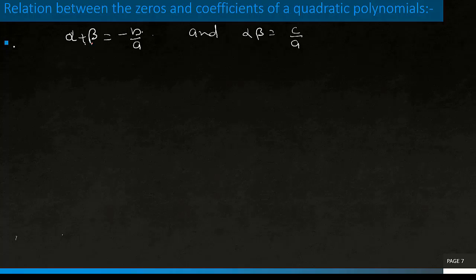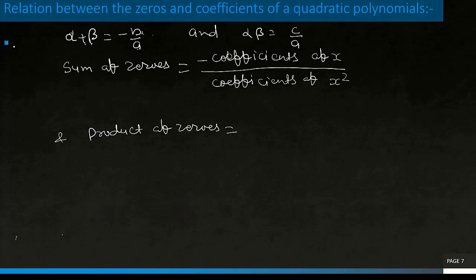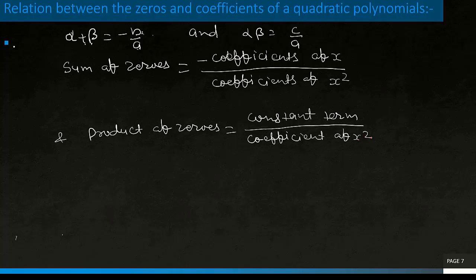Here alpha and beta are zeros of the quadratic polynomial, b is the coefficient of x, and a is the coefficient of x². So we say that the sum of zeros equals minus coefficient of x divided by coefficient of x², and the product of zeros equals the constant term divided by coefficient of x². These are the relationships between zeros and coefficients.